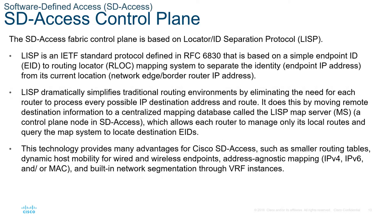In many networks, the IP address associated with an endpoint defines both its identity and its location in the network. The IP address is used for both network layer identification — who the device is on the network — and as the network layer locator — where the device is in the network or to which device it is connected. This is commonly referred to as addressing following topology.